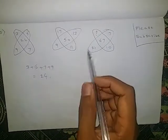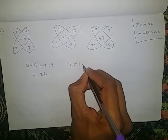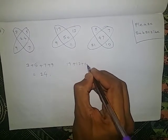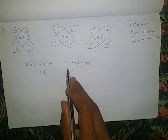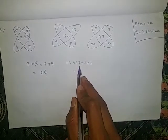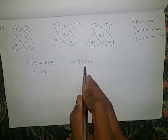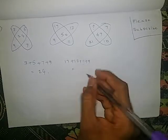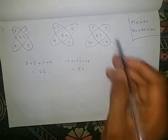The same here also: 17 plus 13 plus 11 plus 9. 17 plus 13 is 30, plus 11 is 41, plus 9 is 50. That is the middle number.